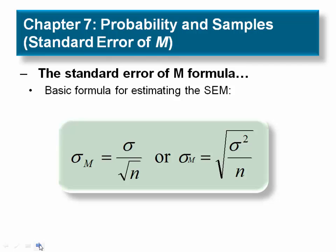There are two versions of the formula on the slide. Both will result in the same value. On the left, one divides the population standard deviation by the square root of the N. On the right, one divides the population variance by the N and then takes the square root of that number.